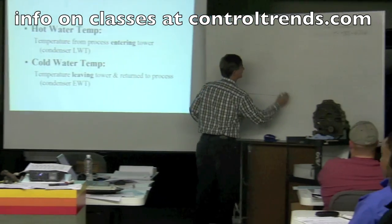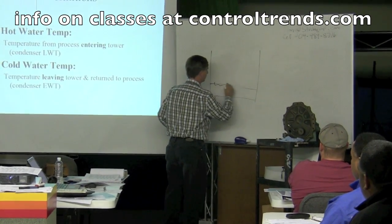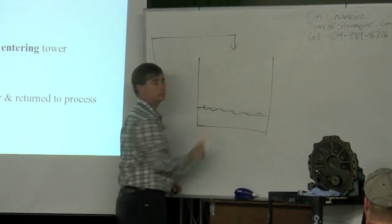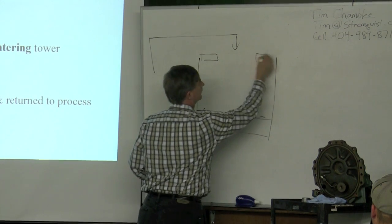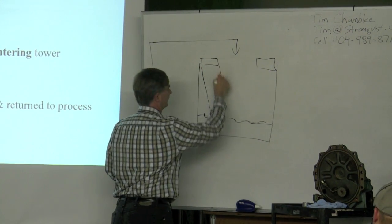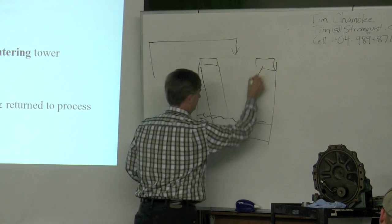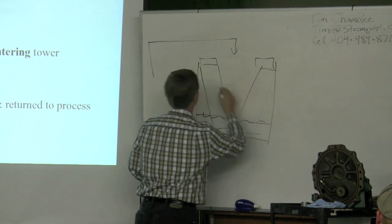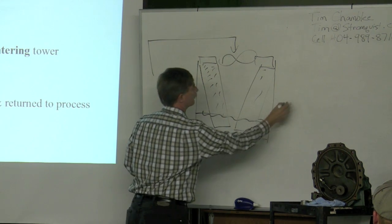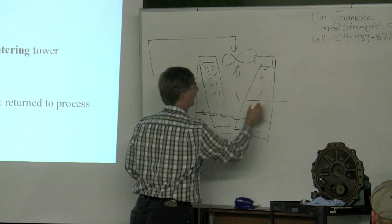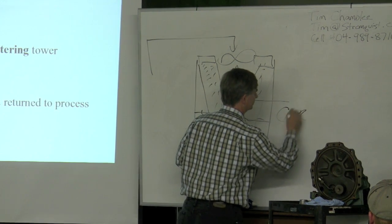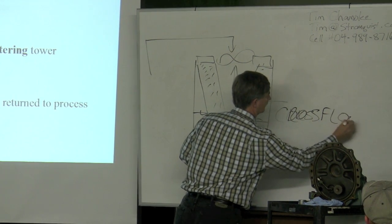Let me give you an example. The tower is a box. In that box you've got a level of water and piping coming in from your chiller, dumping water into the top of the tower into the hot deck. The water goes down through the fill, and you've got a big fan drawing air sideways — by the way, there's a name for this: it's called a crossflow tower.